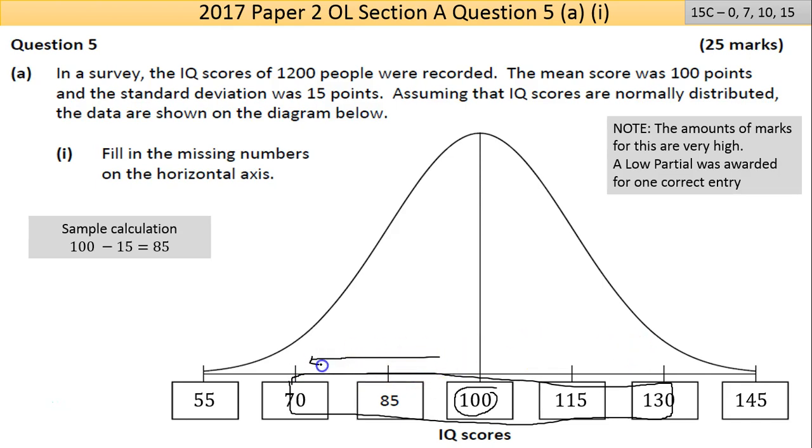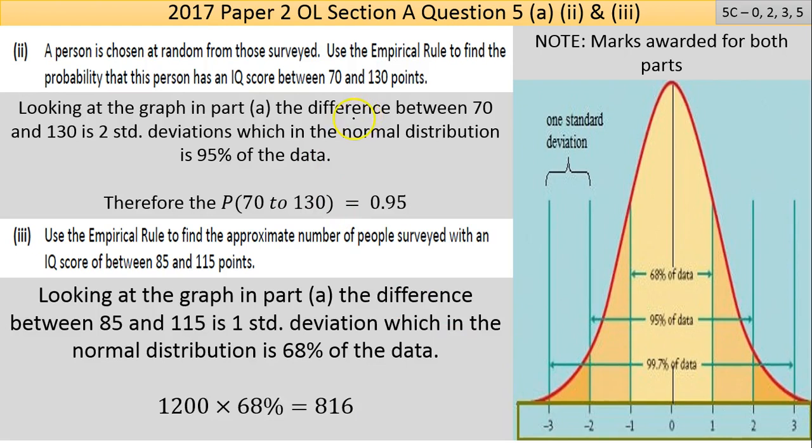So the difference between 70 and 130 is two standard deviations in the positive direction and two standard deviations in the negative. That represents 95% of the data. So you're looking at the empirical rule saying that the probability of you being between 70 and 130 is 0.95. To go to percentage, that would be 0.95 times 100, which is 95 percent.